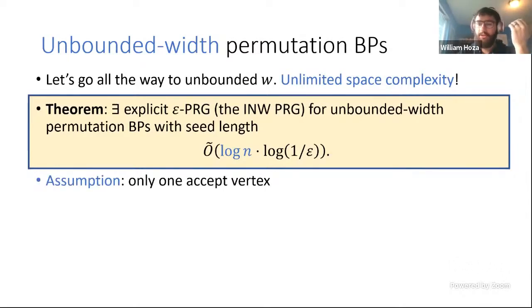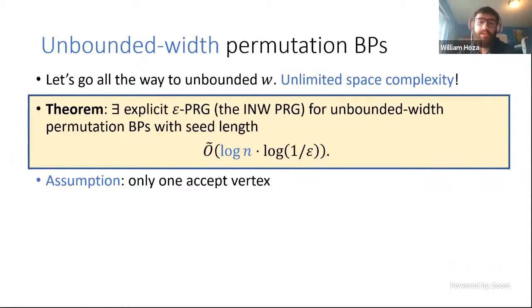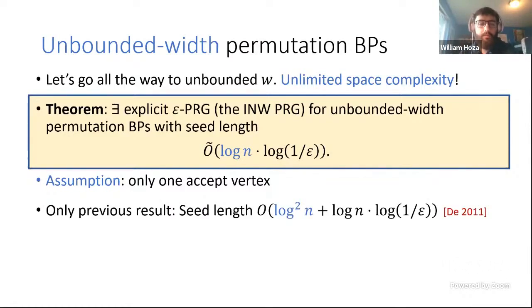There is one crucial assumption: in our model of permutation branching program, we only allow a single vertex in the final layer to be the designated accepting vertex. This really makes all the difference and is a big caveat. The only previous result about this unconventional model was by Hoza, who gave a seed length bound of log^2(n) plus log(n) times log(1/epsilon) — like Nisan's generator for the polynomial-width case, but for unbounded width.